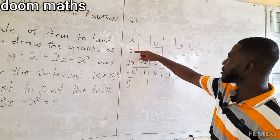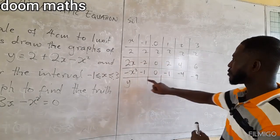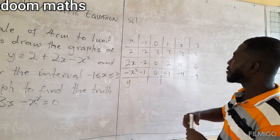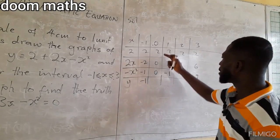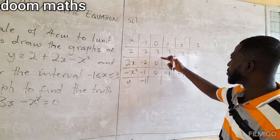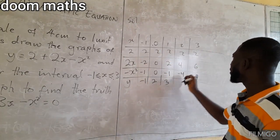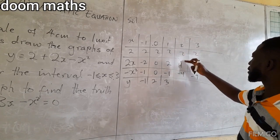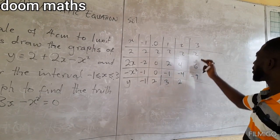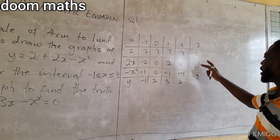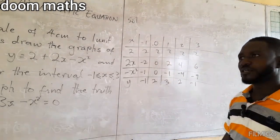We add the rows to get y values. So: 2 plus negative 2 plus negative 1 gives negative 1. Then 2 plus 0 plus negative 1 gives 1 — wait, that is 2. Then 2 plus 2 plus negative 1 gives 3. Then 2 plus 4 plus negative 4 gives 2. Then 2 plus 6 plus negative 9 gives negative 1.